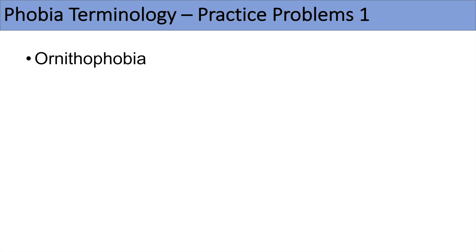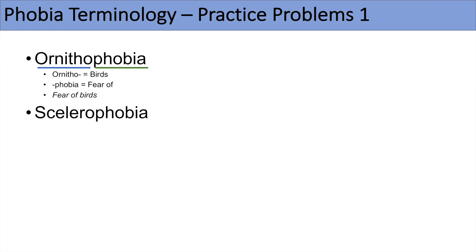Now let's put those prefixes to practice. Ornithophobia — ornitho means birds, and phobia means fear of, so ornithophobia is a fear of birds. Skilerophobia — skilero means crime, so skilerophobia is a fear of crime. Musophobia — muso means mouse, so musophobia would be a fear of mice. Triscaidecaphobia — breaking it down, tri means three and deca means ten, so triscaideca means the number 13. Triscaidecaphobia is therefore a fear of the number 13.